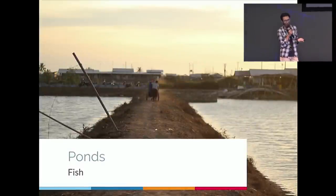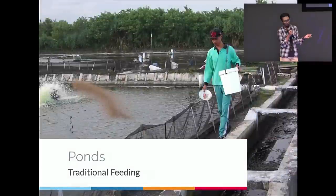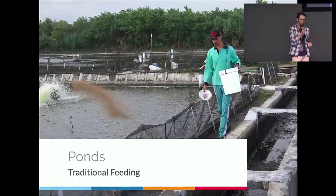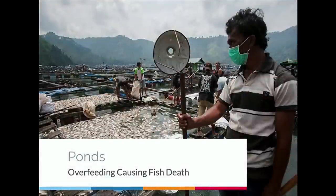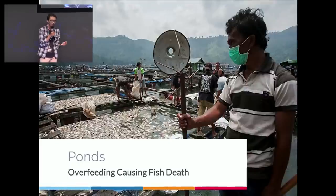What do they do? They usually feed their fish traditionally by dispersing the fish food by hand. This causes a lot of downside for them, because overfeeding could cause fish death, and it happens in just one night. Feed waste goes down to the pond, releases ammonia, and ammonia kills the fish.